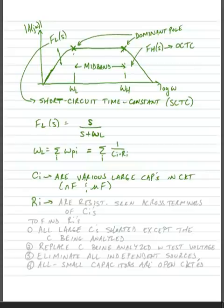Now, our R sub i are the driving point resistances or the resistances seen across the terminals of the capacitor. And basically what these do is cause RC time constants, which we know create poles in our circuit.